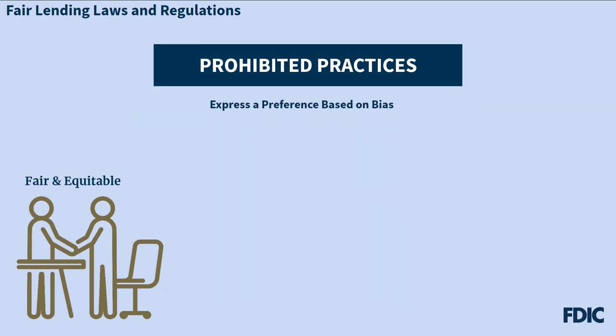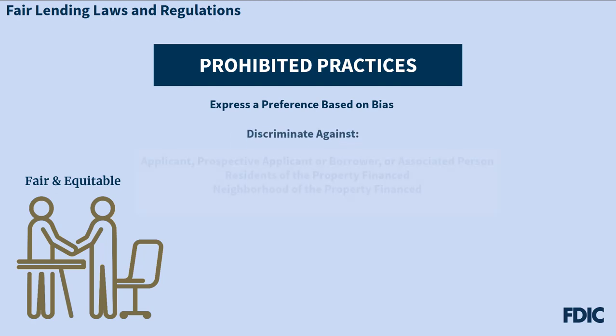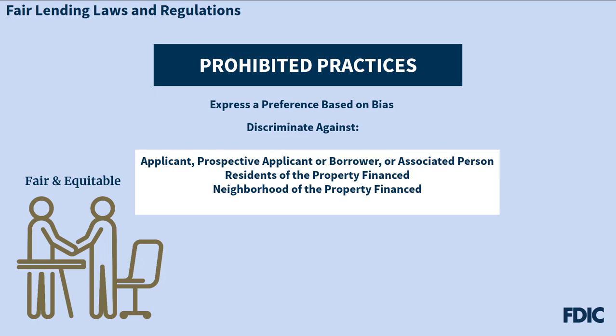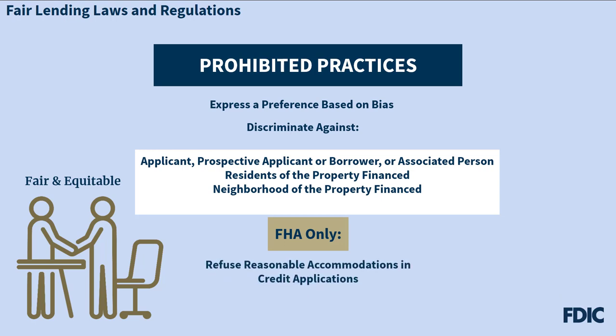A lender may not express a preference on a prohibited basis or indicate that it will treat applicants differently on a prohibited basis, even if the lender treats applicants equally. This applies to both oral and written statements of preference. In addition, a lender may not discriminate against an applicant, prospective applicant, or borrower, or a person associated with any of these individuals on a prohibited basis. Also, a lender can't discriminate against the current or prospective residents of the property to be financed or the neighborhood where the property is located. Finally, under the Fair Housing Act, a lender may not refuse to make reasonable accommodations for a person with disabilities when necessary to give the person an equal opportunity to apply for credit.